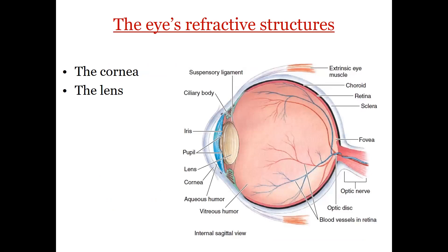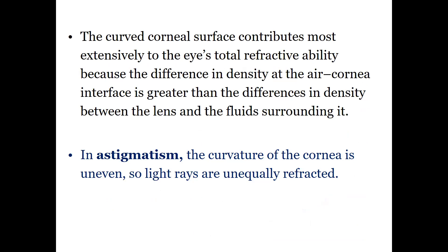The major refractive structures of the eye are the cornea and the lens. The cornea is the major refractive part, accounting for about 70% of the refraction. The cornea is in contact with the air, while the lens is in contact with fluids. The difference in density at the air-cornea interface is greater than at the lens-fluid interface, so the refractive ability of the cornea is higher than the lens.